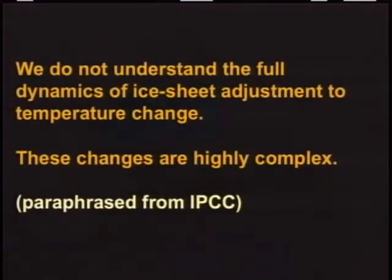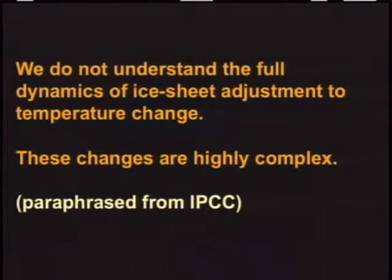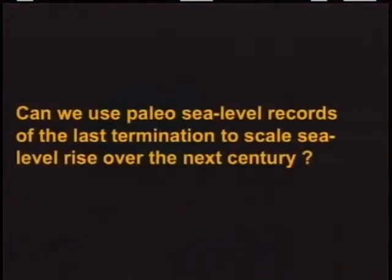Paraphrasing the IPCC, as has been emphasized in the previous talks, they essentially said we don't understand the full dynamics of ice sheet adjustments to temperature change, and that these changes are highly complex. You've got options: you can really push better understanding of the dynamics, which is certainly going on in the race to the next IPCC report. Or you can stand back and take the approach that Fortunat Yoast mentioned — make as few assumptions as possible, come up with as simple a model as possible with as few parameters as possible, to work out the PDF of future change. So the question is: can we use paleo sea level records at the last termination to scale sea level rise over the next century? That's what I'm going to try and do.